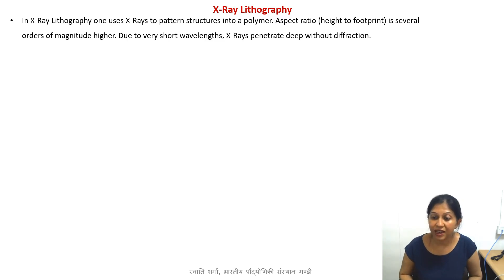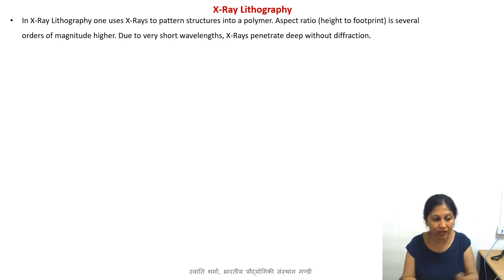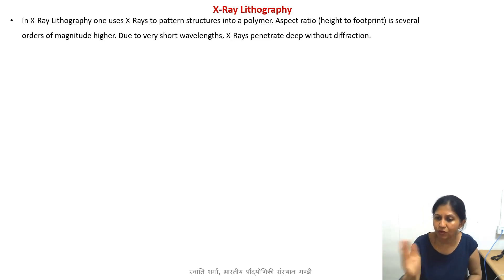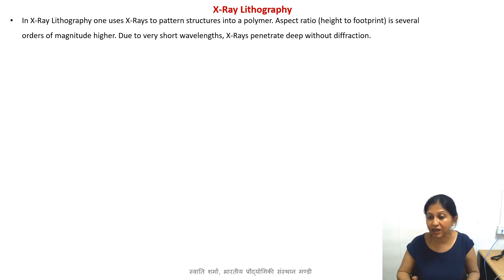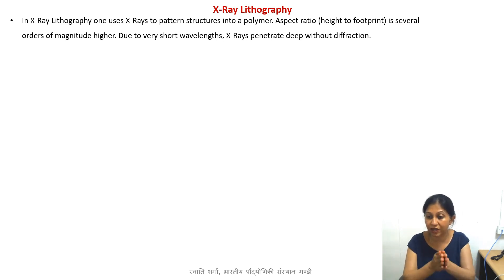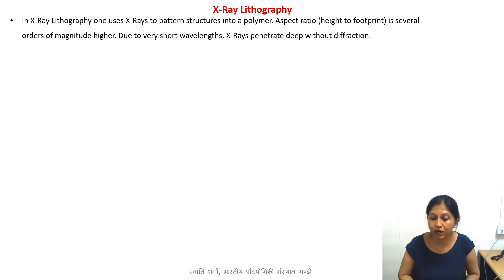X-rays are very high energy radiations, much higher than UV light, and x-rays can also penetrate very deep inside an object. They are also used for medical purposes, so they can penetrate deep inside any object. So obviously they are also better radiations for making micro-scale structures or even nanoscale structures because of their very small wavelengths — the diffraction is also relatively much lower.